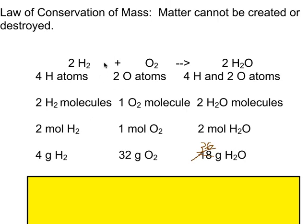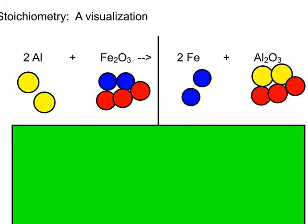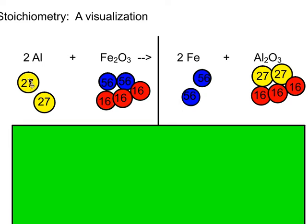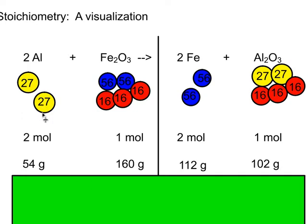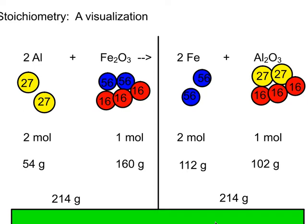Here's a visualization of stoichiometry using the thermite reaction. Aluminum has a molar mass of 27 g/mol. The balanced reaction says: two moles of aluminum plus one mole of iron oxide makes two moles of iron and one mole of aluminum oxide. So we take 54 grams of aluminum and 160 grams of iron oxide to make 112 grams of iron and 102 grams of aluminum oxide. In either direction, we start and end with 214 grams of material.